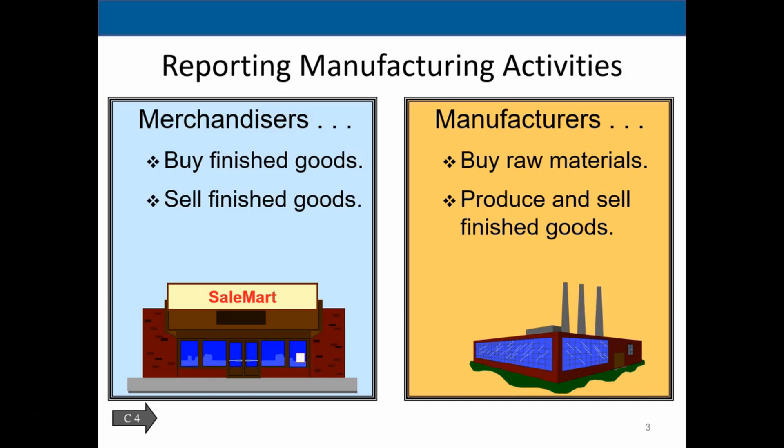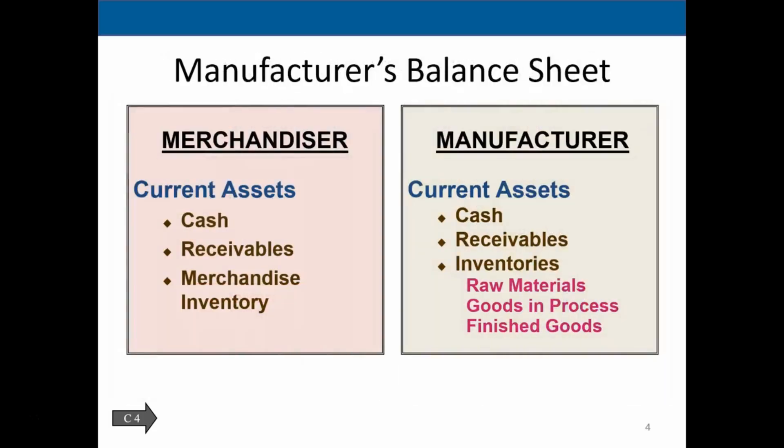A merchandiser buys finished goods and sells finished goods — like Amazon — dealing with inventory but not the manufacturing process. The manufacturer will buy materials, then produce, and then sell the finished goods. So we have that added complexity of the production process going from raw materials to materials that are in production, and finally to the finished goods that result.